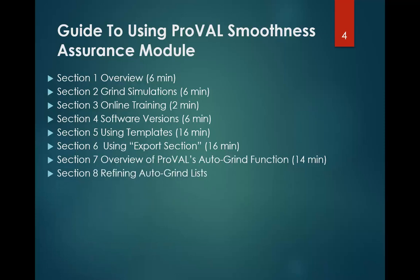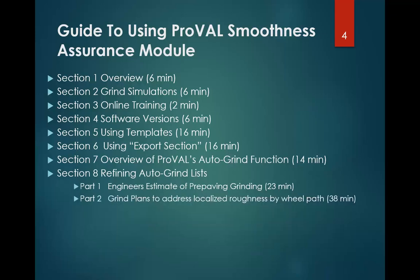Section eight is titled Refining the Autogrind List and is broken into two parts. Part one is 23 minutes and provides the information necessary to do an estimate for pre-paving grinding during the project development stage. At that stage, a full grind plan isn't necessary because conditions will change in the field and new profiles will be needed, so you only go through the initial steps for localized roughness without making a final plan. Part two covers how to make refinements to those plans — specifically for construction, when you're developing a grind plan for localized roughness one wheel path at a time.